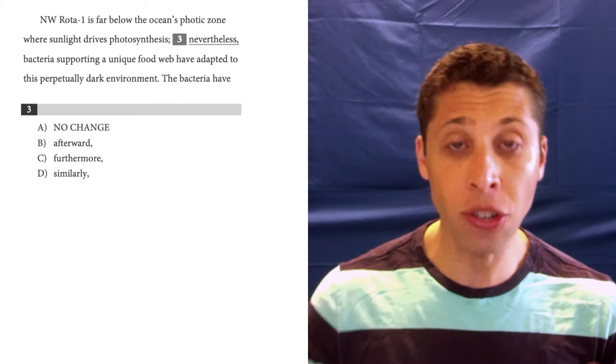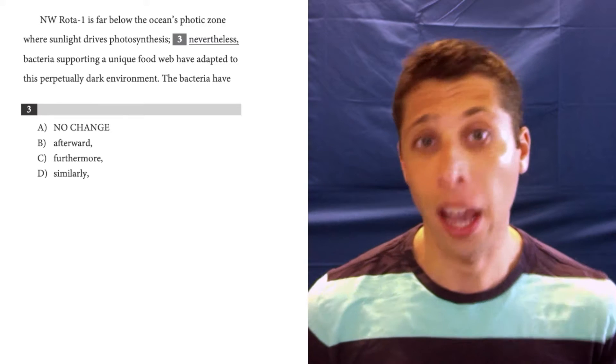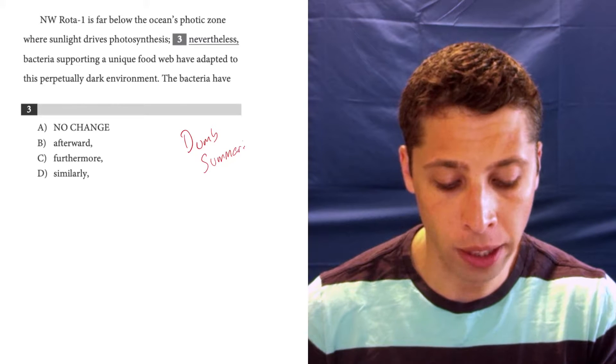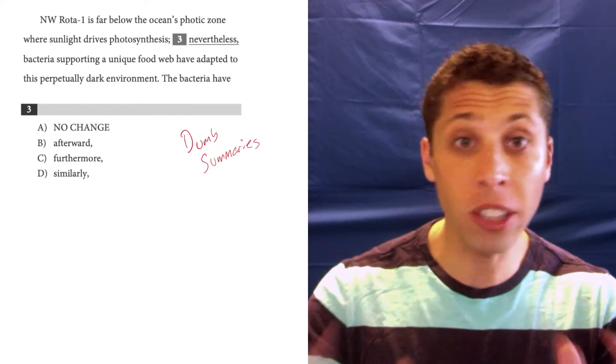And since this transition is in the middle of a sentence, we're really just looking at what comes before that semicolon and what comes after it. And we want to use dumb summaries of our transition words to better understand what's going on. So let's look at the sentences first.